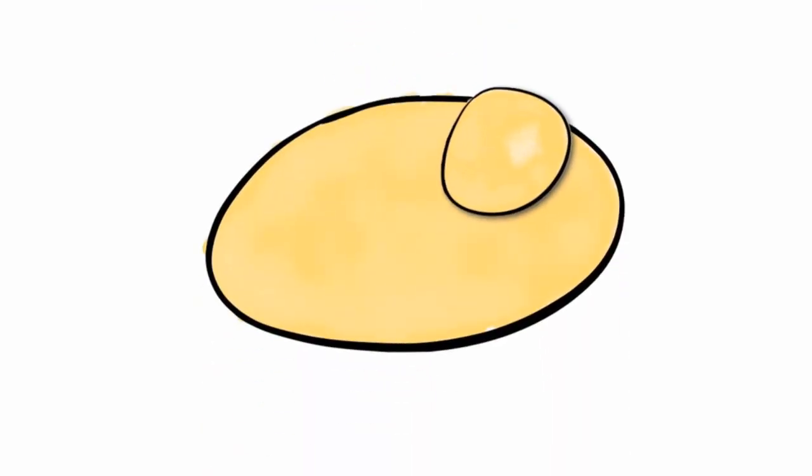Another method of asexual reproduction is budding. Unicellular yeast cells grow new cells off the side of another. When the cell is developed, it falls off, and a new yeast cell is produced.